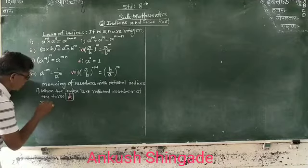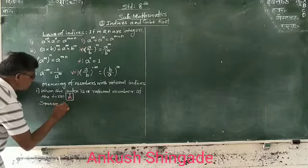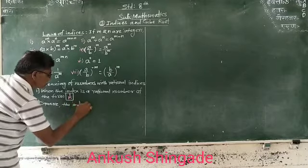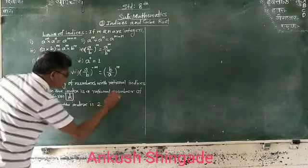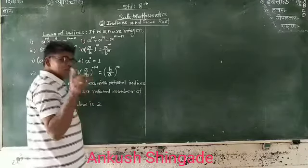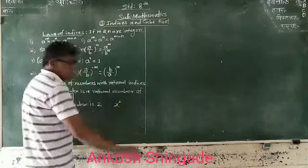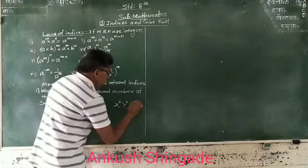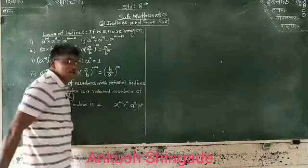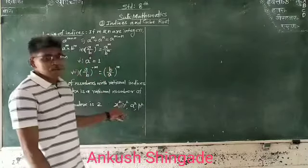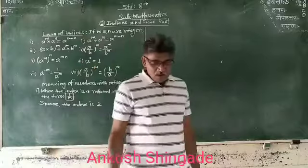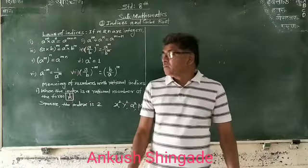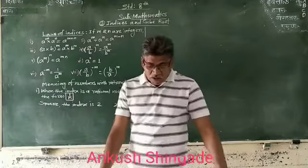First, to show the square of any number, the index is 2. For example, square of X is X squared; square of Y is Y squared; square of A is A squared; square of T is T squared. To show the square of any number, we write or denote it using the number 2 — here the index is written as 2.